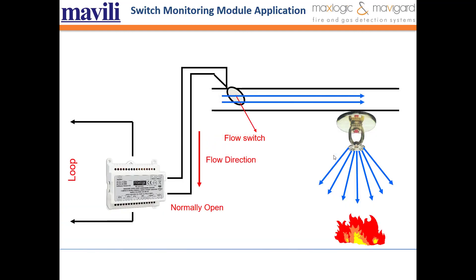Here is an example of a switch monitoring module. As you can see, it is connected to the loop line and monitoring in normally open mode by default. It is connected to a flow switch and checks the relay position. The open or closed status of the flow switch can be seen on the panel via the switch monitoring module.